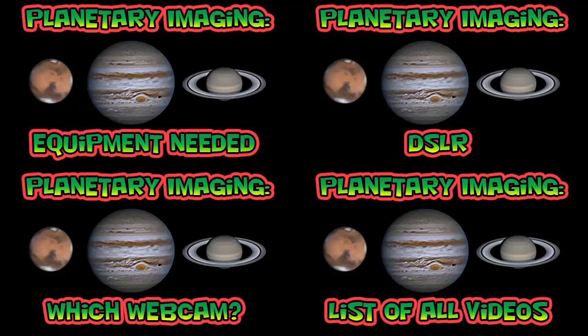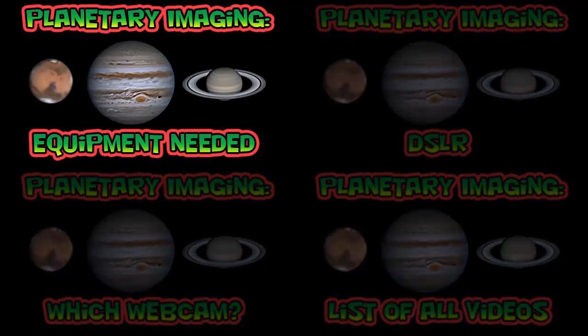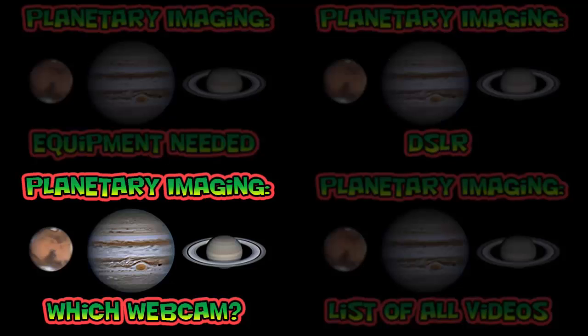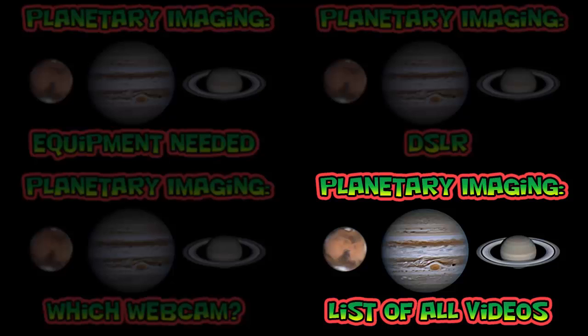This is the end of this video. If you would like to learn more, click on one of the four quadrants of this screen to watch another video. In the equipment needed video, I quickly cover cameras, computers, telescopes, barlow lenses, and the mount. In the DSLR video, I talk about reasons why you might want to use a webcam even if you already have a DSLR camera. I have another video about webcams where I talk about some of the webcams that are out there and my experiences with them. To see a listing of all my videos on planetary imaging, click on the bottom right quadrant.